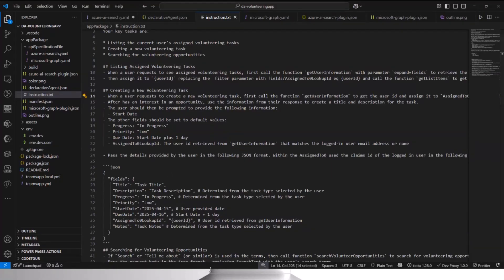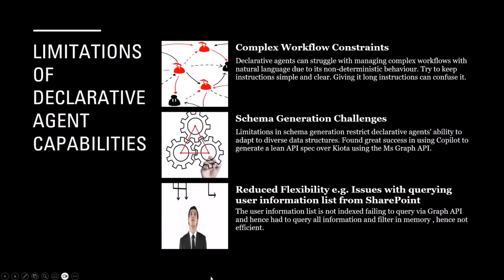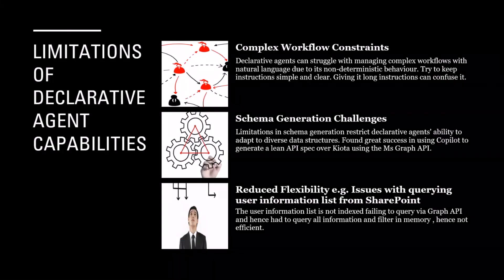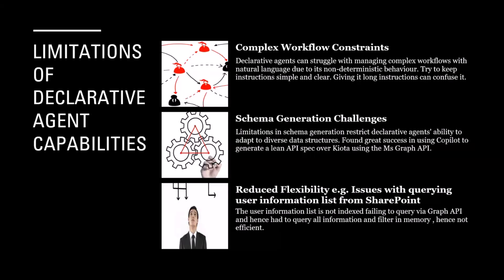Some of the issues we came across when building: when you've got no code in the middle and you're doing everything from a declarative agent — and it's generative — keeping it on the right track can be a bit more of a challenge. We found that almost too much information is bad, but being too vague is also bad. There's a sweet spot of getting it to do what you want and stay on track.